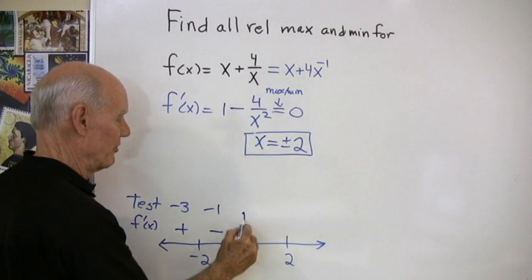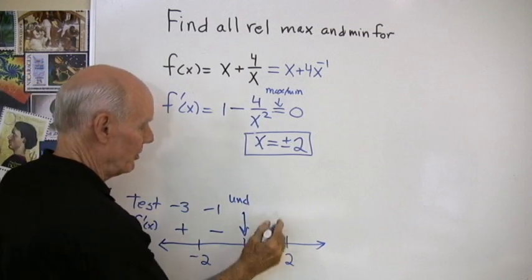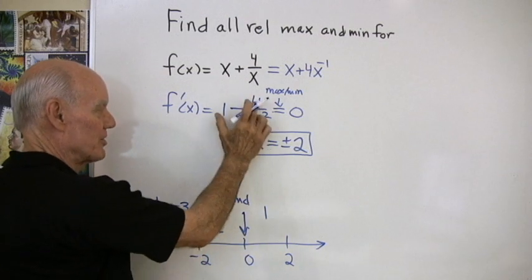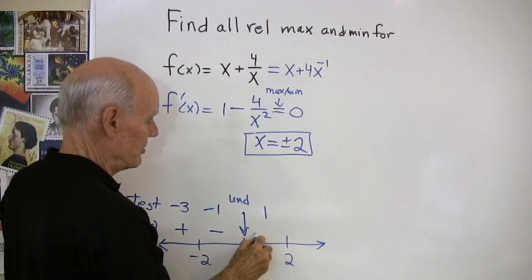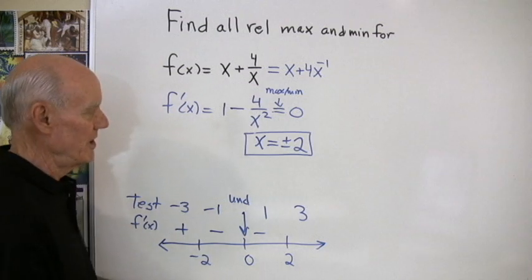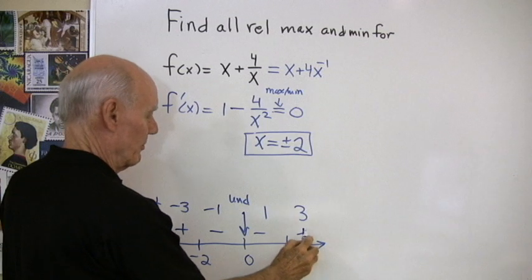Here, my first derivative is undefined. I'll just put that in for reference. I'll go to this interval. I'll take the number 1, test it in here. I get 1 minus 4 over 1. So 1 minus 4 is negative 3. So that's a negative number. And here I'll test the point 3. 3 squared is 9. 1 minus 4 ninths is a positive number.